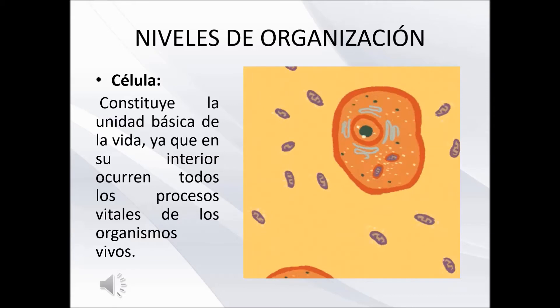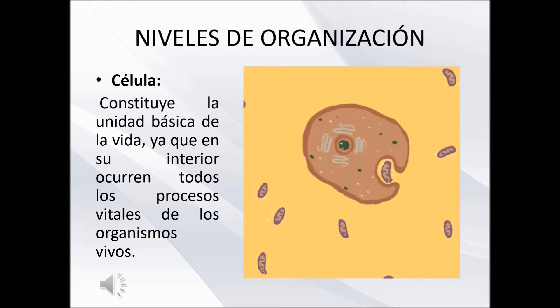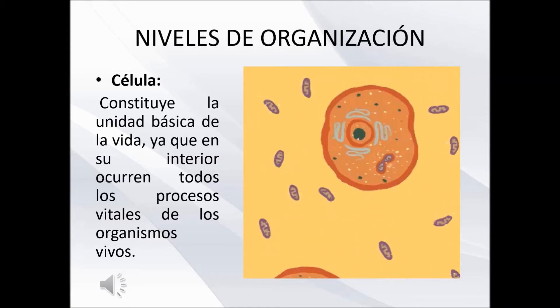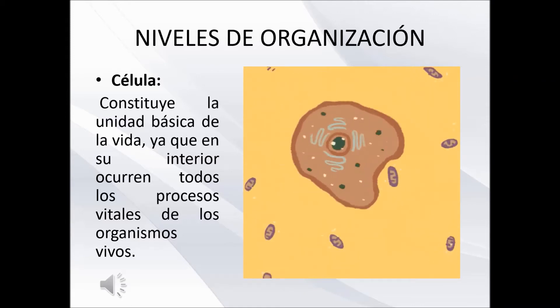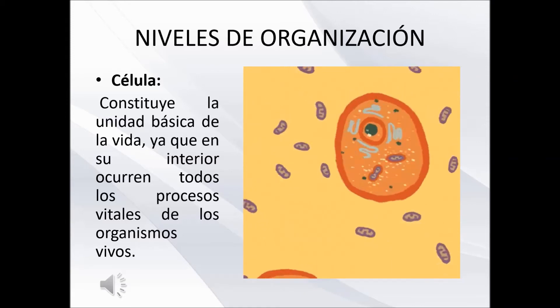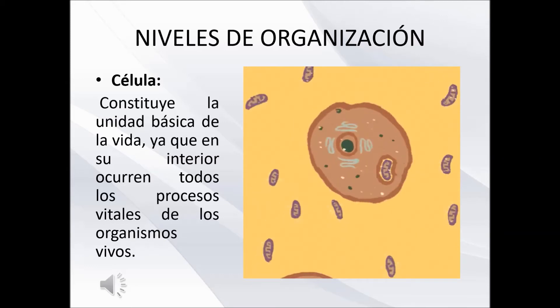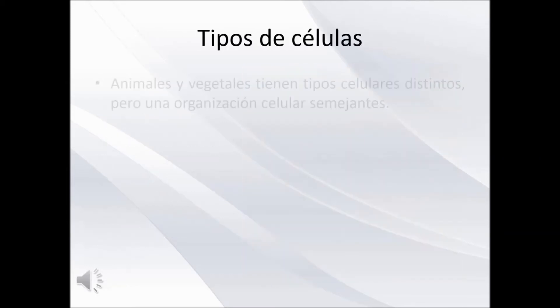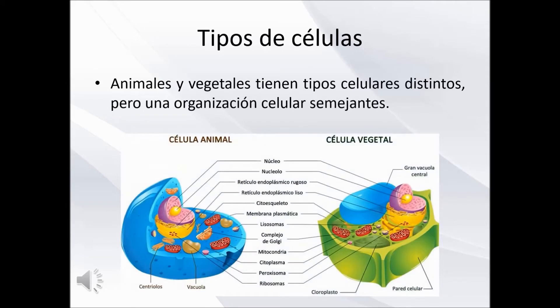El primer nivel de organización que todos los seres vivos poseen es la célula. Esta es la estructura más pequeña de los seres vivos capaz de realizar sus funciones vitales. Existen dos tipos de células: animales y vegetales. Estas tienen tipos celulares distintos, pero una organización celular semejante, como se observa en la imagen.